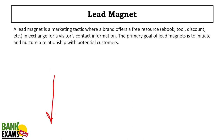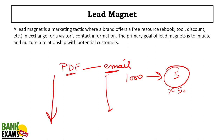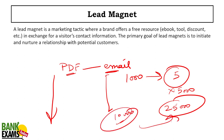Lead magnet: for example, I give you a free PDF. You open the link, I ask for your email, I give you the PDF, and then I start sending you emails. Out of 1,000 students, maybe five buy the course at 5,000 rupees — that's 25,000 rupees. If the PDF cost 10,000 rupees to make, I made 15,000 rupees profit. That free PDF is the lead magnet.